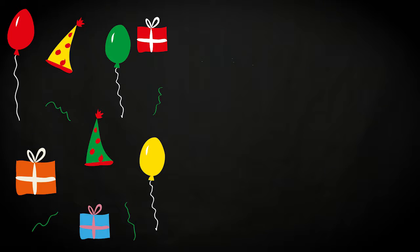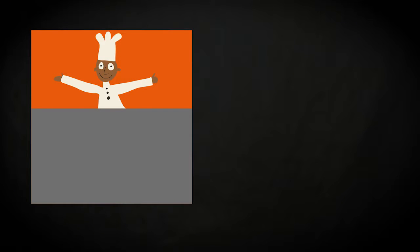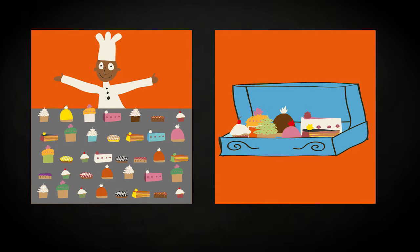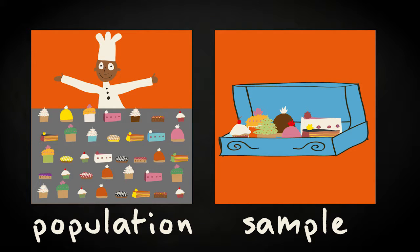Let's start with an example. Imagine tomorrow is your birthday and you have decided to give your friends and yourself a special treat on this occasion. So you go to the local confectioner to buy 7 pastries. The choice is overwhelming and everything is delicious, so you ask the confectioner to select 7 pieces of pastry at random. You can consider all the pastries available in the shop as the population, and the 7 pieces are a sample from that population.